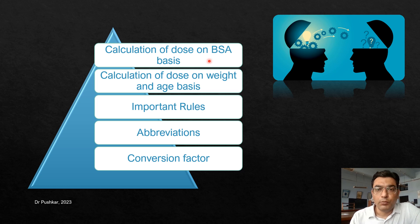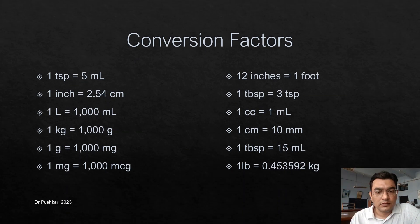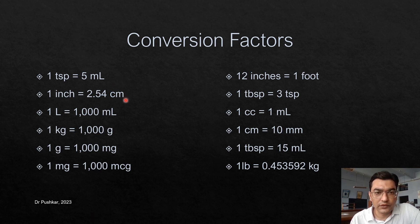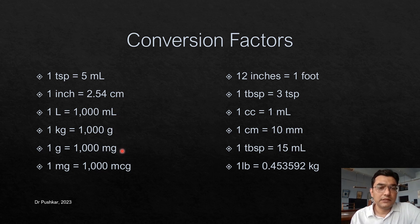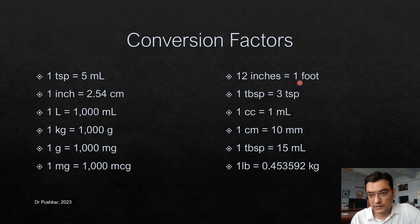These are the most common conversion factors: 1 TSP equals 5 ml, 1 inch equals 2.5 cm, 1 liter equals 1000 ml, 1 kg equals 1000 grams, 1 gram equals 1000 milligrams, and 1 milligram equals 1000 micrograms.